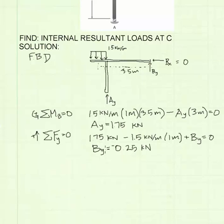We can calculate that By equals negative 0.25. The negative sign means I drew my arrow in the wrong direction. I can also show this as 0.25 kilonewtons pointing down.